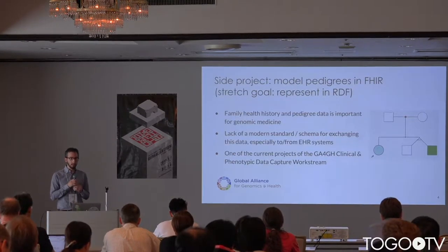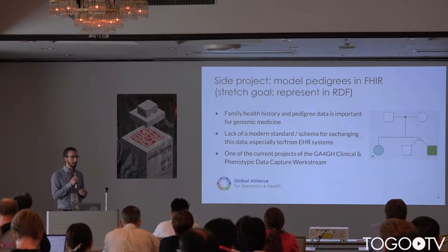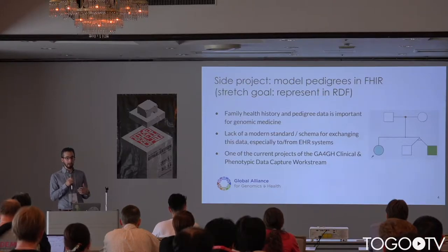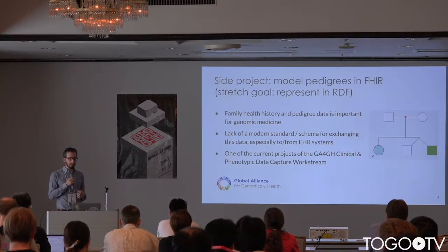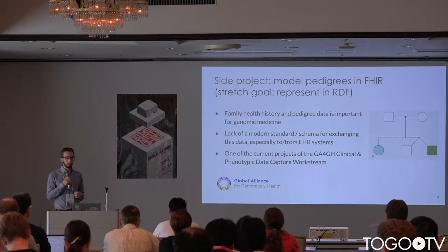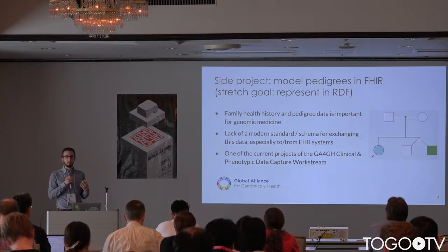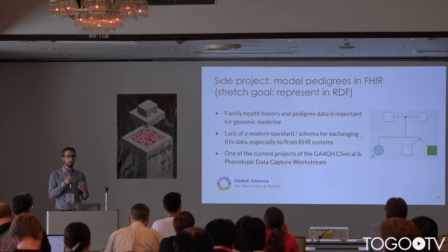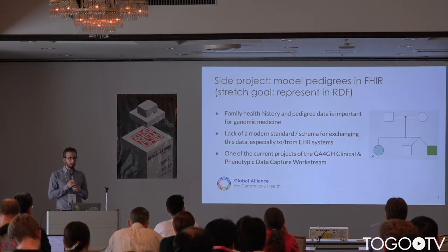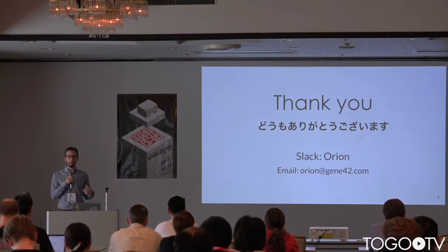One of the side projects I'm interested in is representing family history pedigree information in FHIR and ideally over RDF. This is an important piece of information for genomic medicine, but there aren't really good standards for exchanging this data — especially to and from health record systems. FHIR is an emerging standard in that space, but its support for this information hasn't been thoroughly trialed. This is one of the current projects I'm working on within the Global Alliance's clinical and phenotypic data capture work stream, and I think this might be a good opportunity to move that forward. Domo arigato gozaimasu — you can reach me on Slack if you're interested in any of this. Thank you very much.